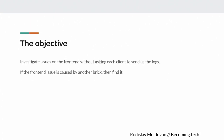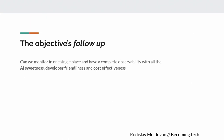The objective is to investigate frontend issues without asking each client to send us logs. If a frontend issue is caused by another component, what is that component and what exactly is happening? Quite often in a company you want to investigate a problem, and somebody will say: oh, you want to see the logs? You need to use that tool.